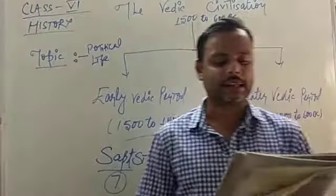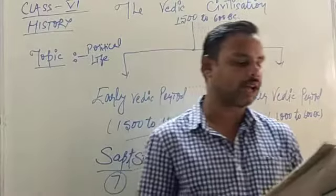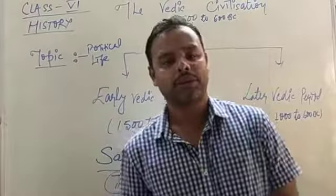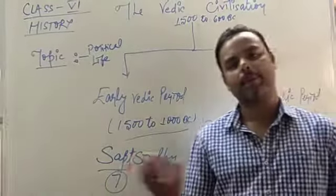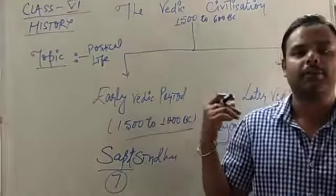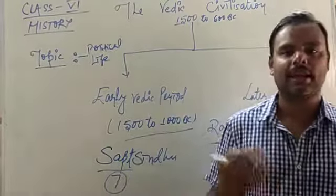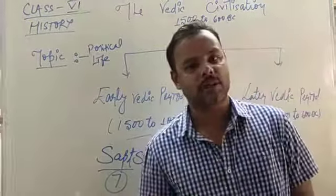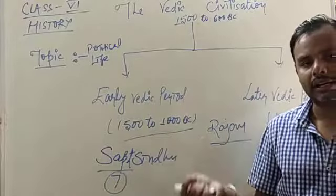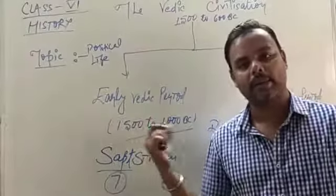The Rig Veda mentions that there were craftsmen such as carpenters, chariot makers, weavers, leather workers and potters. These are different types of work that people used to do during the early Vedic period. How did we come to know about these informations? It is from the Rig Veda, which is composed of 1028 hymns and was written in the early Vedic period only.